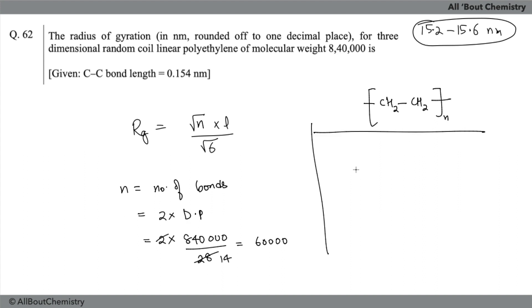Now I have to calculate radius of gyration, so Rg will be equal to √(60,000 × 0.154) / √6. Length of the single monomer in nanometers is 0.154. I can write it this way as well: Rg = √(60,000 / 6) × 0.154. This will become 10,000. Under root of 10,000 will be 100.